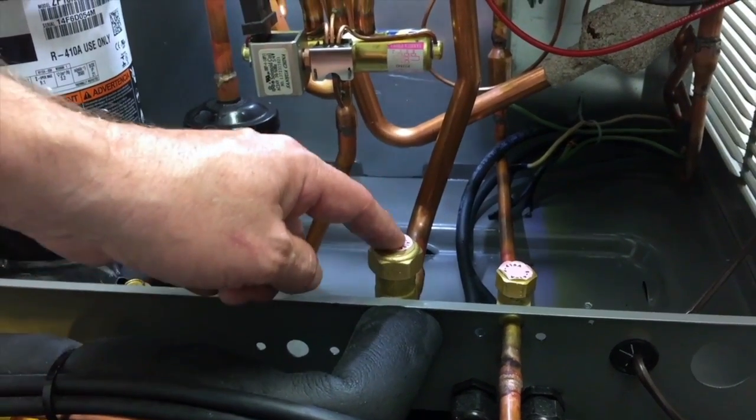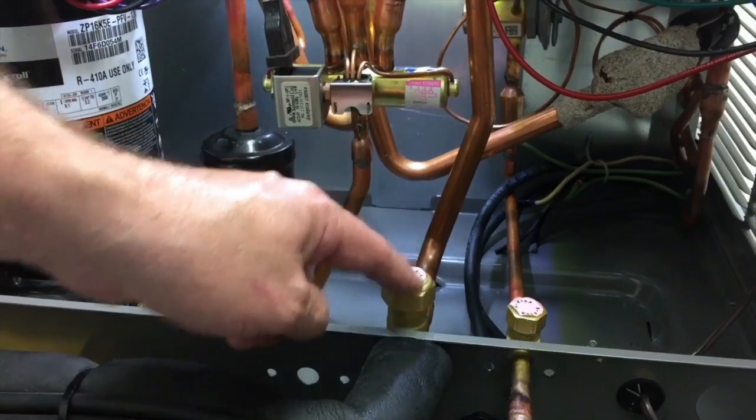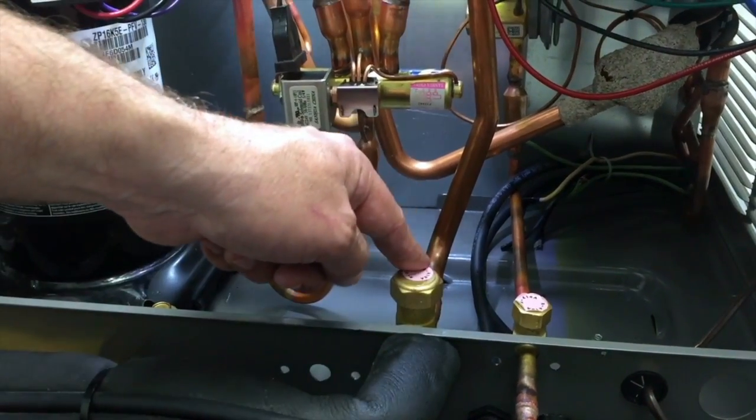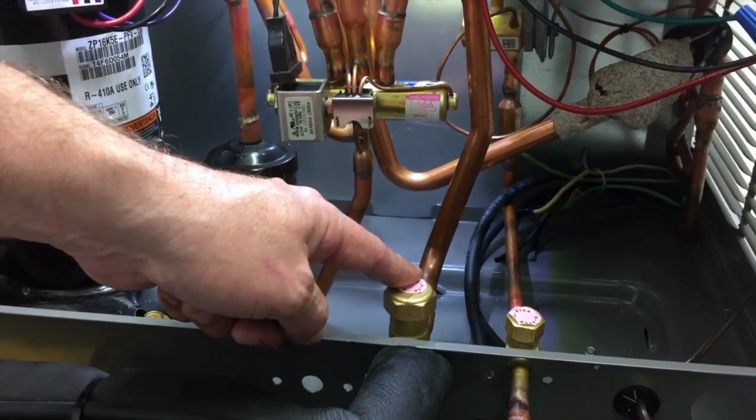We don't want to hook up to this line, which is called the vapor line on a heat pump system. The reason this is the vapor line is because in the reverse cycle, in the heating cycle, the hot gas can flow out this way. In the cooling cycle, the cool suction gas flows back this way, so this line can be either high pressure or low pressure.